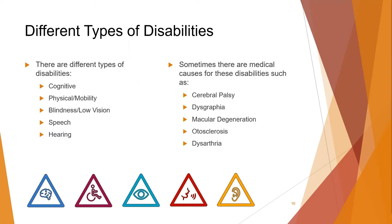There are different types of disabilities, including cognitive, physical mobility, blindness and low vision, speech, and hearing. Sometimes there are medical causes for these disabilities, such as cerebral palsy, dysgraphia, macular degeneration, otosclerosis, and dysarthria.